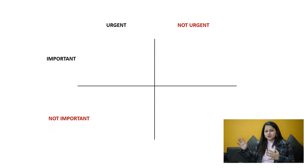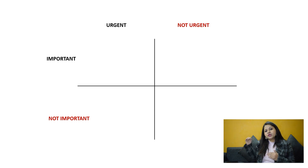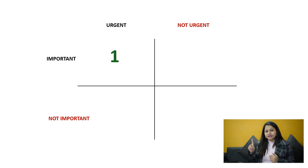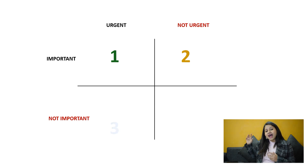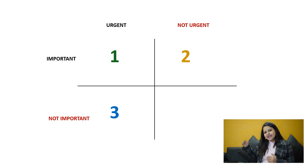Let's begin with the first quadrant: urgent and important. In this quadrant, you are going to put tasks that are urgent as well as important — that is our first priority. Adjacent to that, we have not urgent but important, where we put tasks that can be done later but are still important. Then we have the third quadrant with tasks that are urgent but not important, and the fourth where tasks are neither urgent nor important.